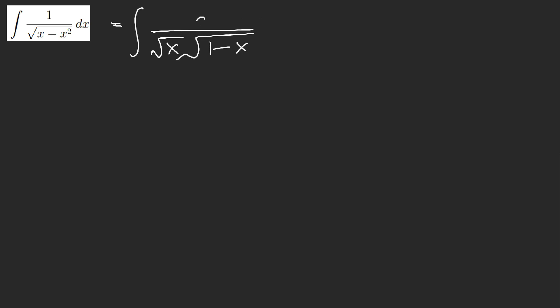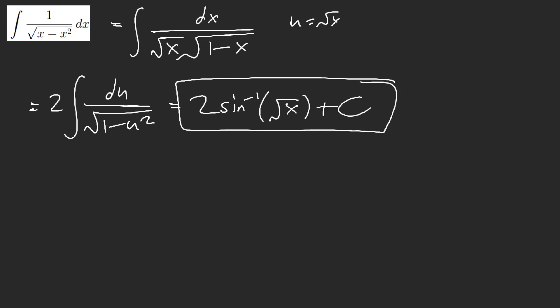1 minus x. U equals square root of x. This is 2 du. This we get inverse sine. Square root of x plus c. Okay.